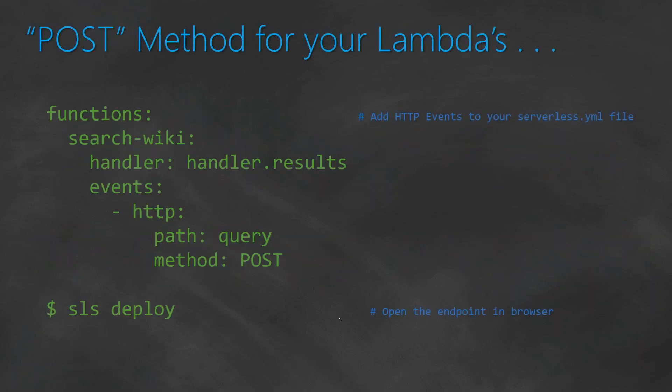Earlier we saw how to do that with a GET parameter. When you're using a GET method you can use query strings. When you're using a POST method you will have to send it as a body text, then process it and send back the message to the user. Let us go ahead and see what changes you need to make in your code so that you can receive inputs and process them.